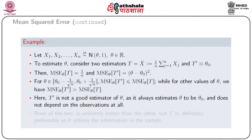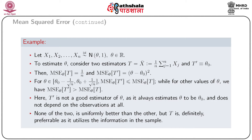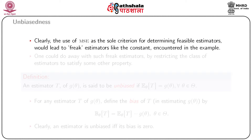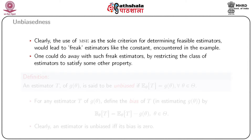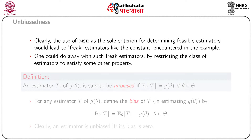T₁ is a better estimator than T' because it utilizes all the observations. From the above discussion, it is clear that if MSE is the only criterion in search for a good estimator, there may be freak estimators like T' which perform better than a generally good estimator at some specific points. It is therefore necessary to eliminate such freak estimators. We now define the unbiased estimator: an estimator T is said to be an unbiased estimator of g(θ) if E_θ(T) = g(θ) for all θ ∈ Θ.